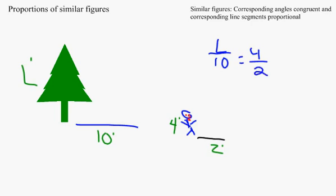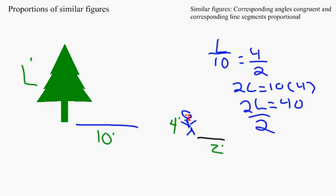Now the problem is 2L equals 10 times 4. Bring down the 2L and solve 10 times 4, which equals 40. Now divide 2 from each side. 2L divided by 2 equals L, and 40 divided by 2 equals 20. So L equals 20.